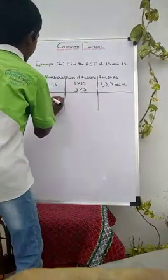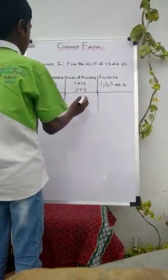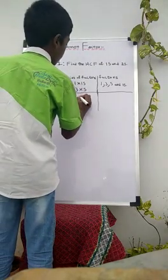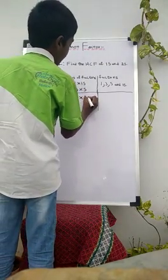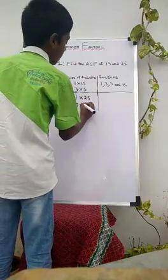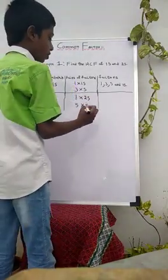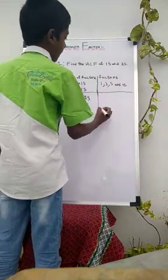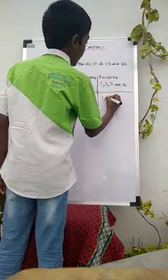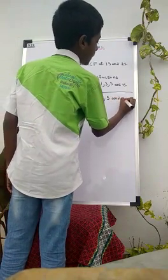Number 25. Here the pairs of factors of number 25 are: 1 × 25 = 25, and 5 × 5 = 25. So the factors of 25 are 1, 5, and 25.